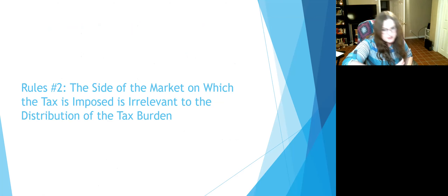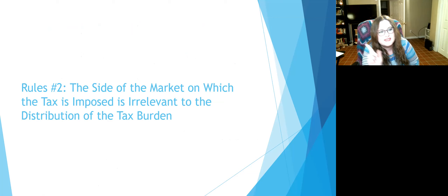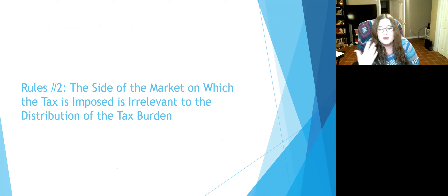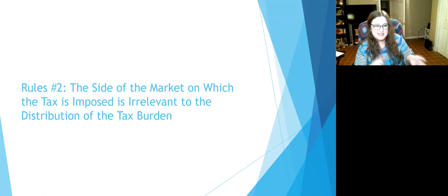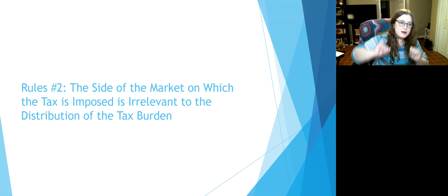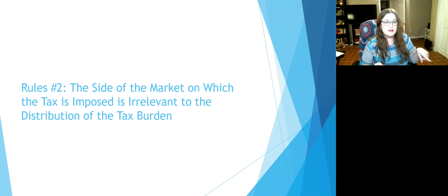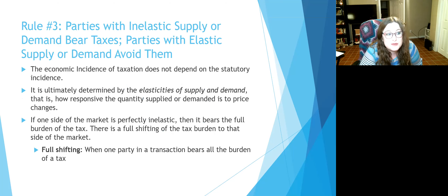Rule number two: it didn't matter if I put the taxes on the buyer or on the seller. It's irrelevant because prices are going to adjust similarly so that the buyer pays one amount and the seller receives one amount into their bank account — whether you put it on the buyer or the seller, it comes out to the same realization. Either the seller has to drop the price to keep customers who are paying a tax on top, or the seller raises the price but still gets less money at the end of the day. It doesn't matter which side of the market the tax is on.